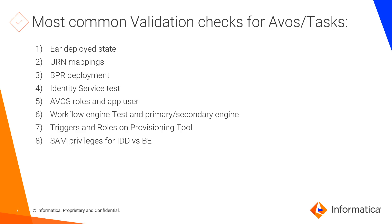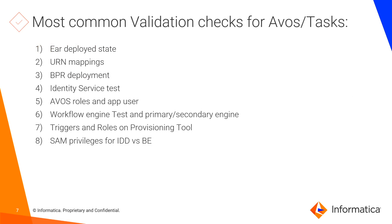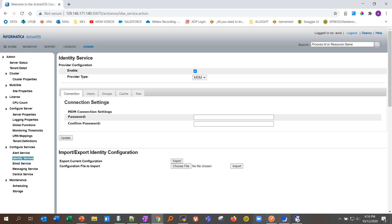Now for common validation checks when ActiveVOS is installed but there are still issues with tasks. First, ensure your ActiveVOS EAR file is deployed and in a deployed state. The WAR file is not necessarily used in conjunction with the ActiveVOS EAR — the central WAR file is mostly used when ActiveVOS is installed separately without MDM. The important part is to have your EAR deployed. Second and third, check whether your URN mappings are correctly set and whether you have your beeper definitions as shown in step one.